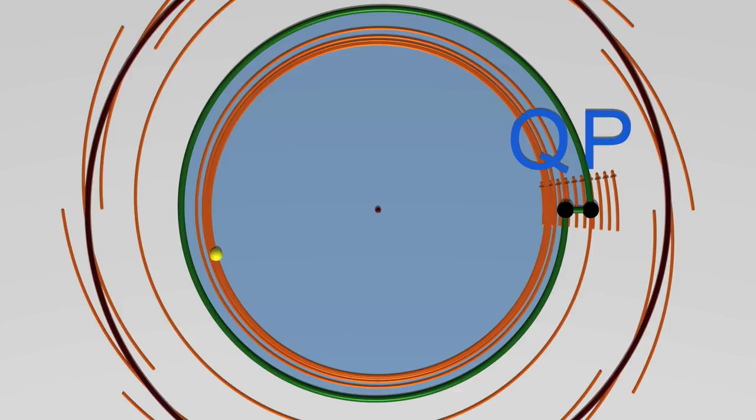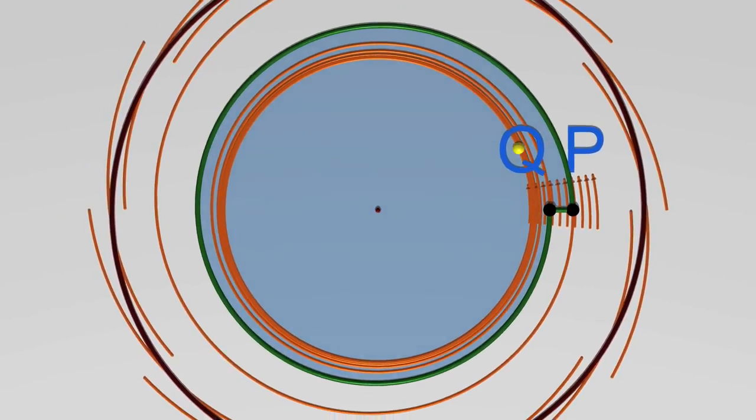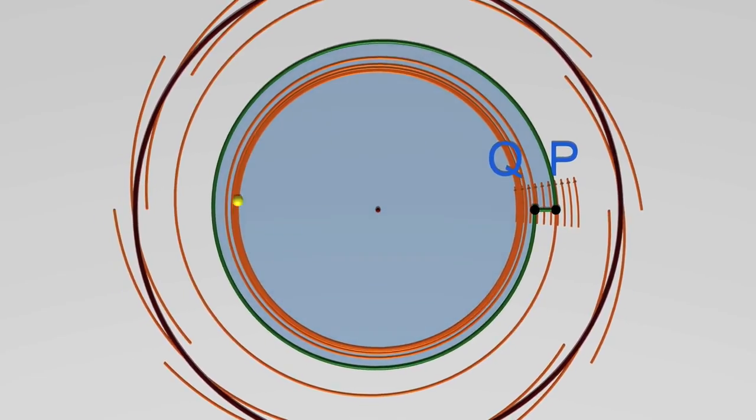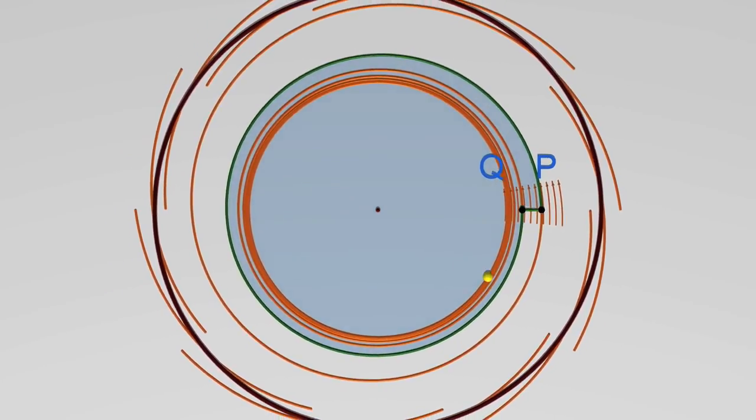The trajectory starting from Q cannot escape through the line QP either. There the vector field is coming in, not going out. You can see that the trajectory from P may well return very close to P, but then it is condemned to never escape.